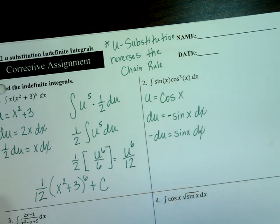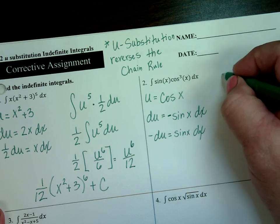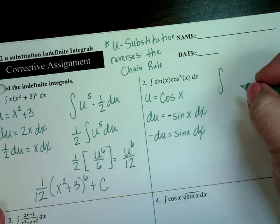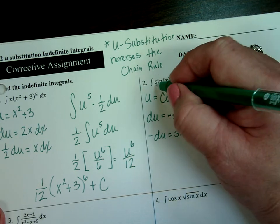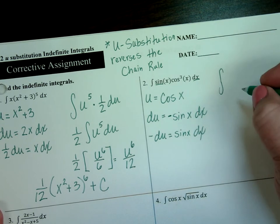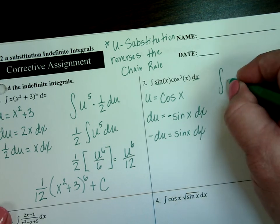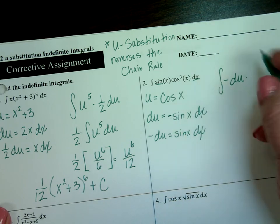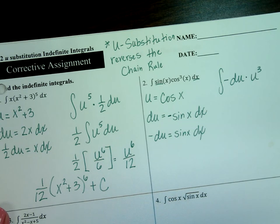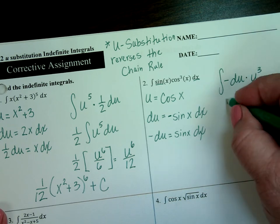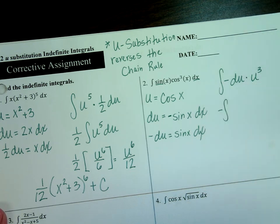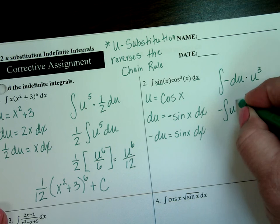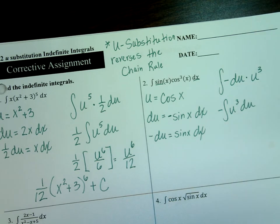I think I'm ready to do my substitution. Sine of x dx — that's this piece and this piece — equals negative du. And then I have cosine, which is my u being cubed. That looks funky, so I'm going to clean it up. First thing is take the negative out, and then I have u cubed du — that's easier for me to take the integral of.